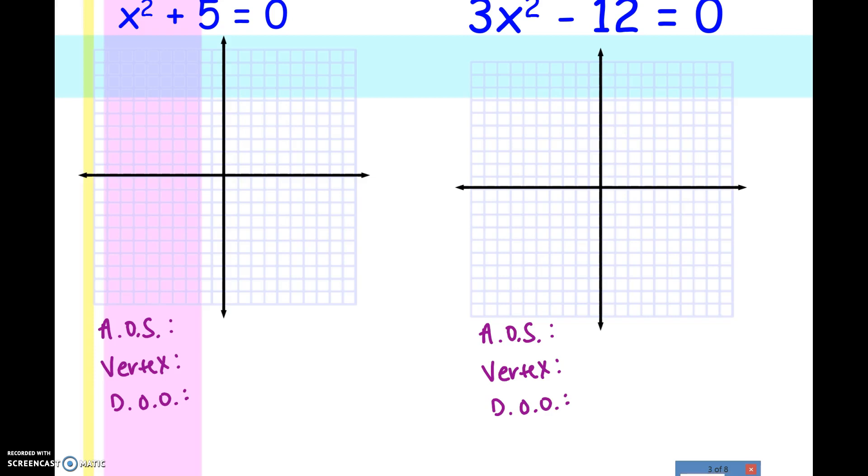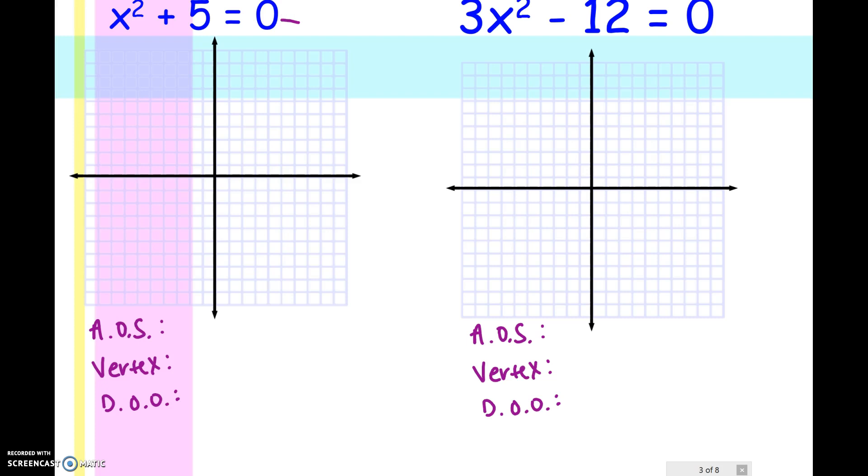Let's look at these two examples. If we were to graph the first example, all I really need to find is the axis of symmetry, the vertex, and the direction of opening. As long as I know that, I know if it's going to cross the x-axis or not. So I'm going to do a rough sketch, just so I have an idea of how many solutions this would have.